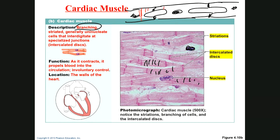When you see striations, you have two choices: skeletal muscle or cardiac muscle. Skeletal muscle cells will have many nuclei and will be elongated. Cardiac muscle cells will have one nucleus and will be branched — you can see the branches there.